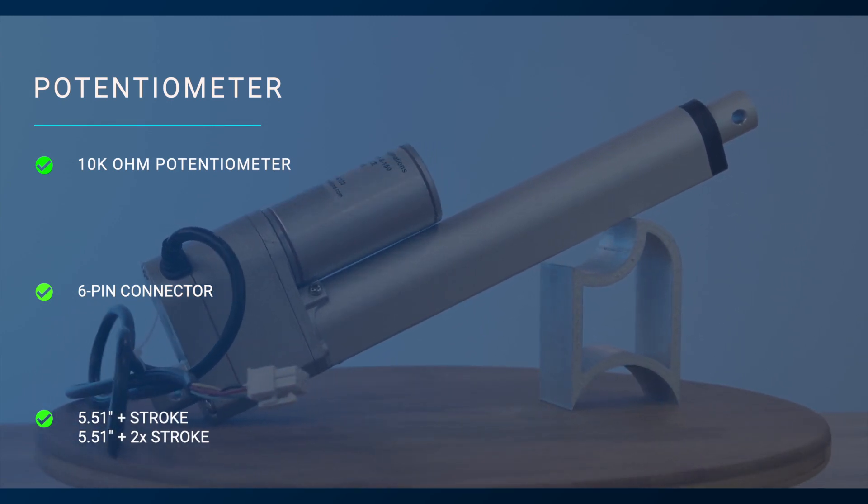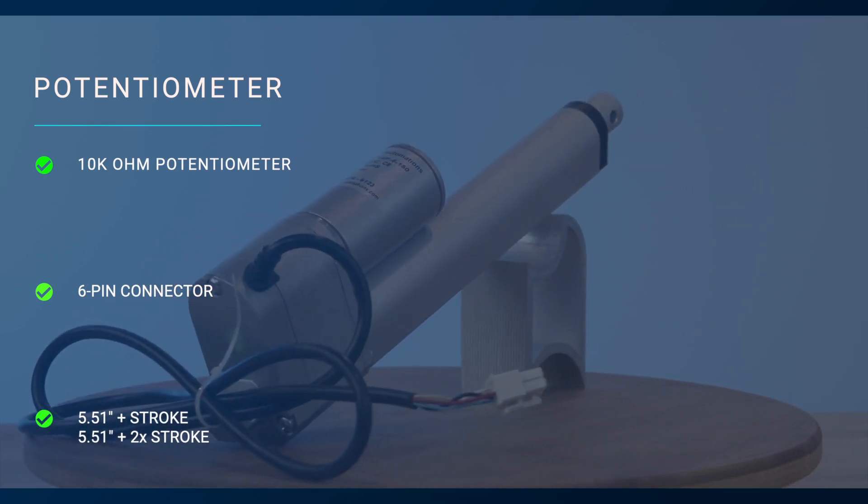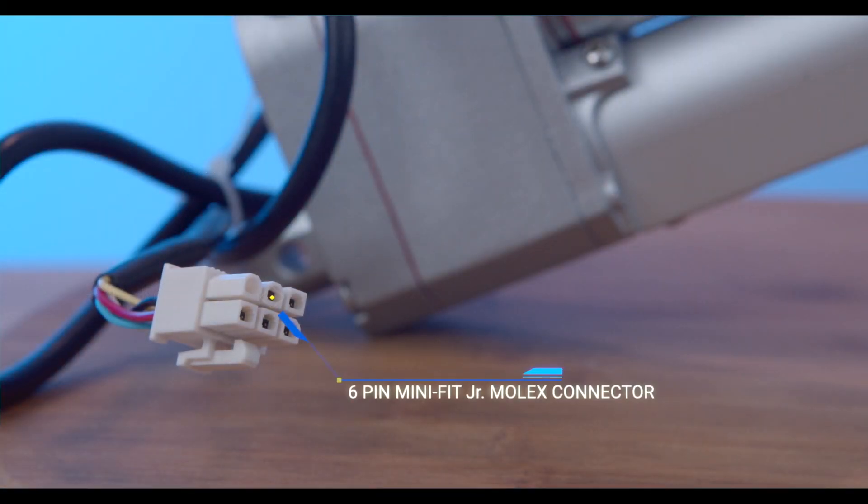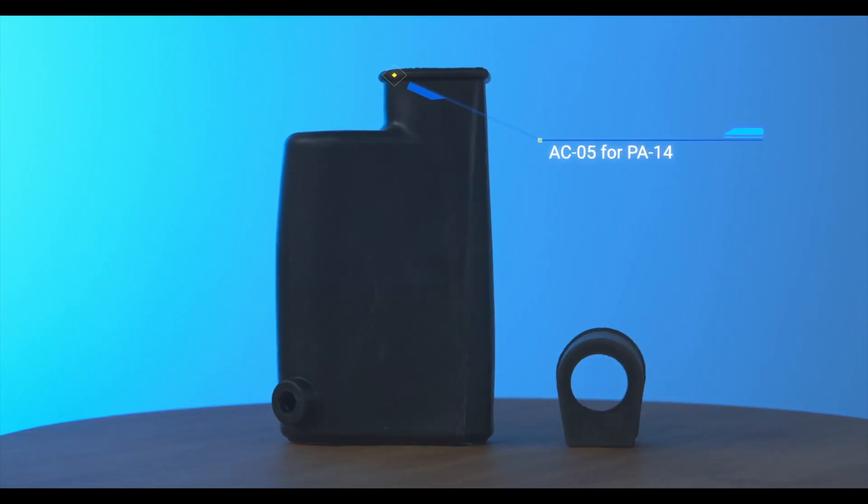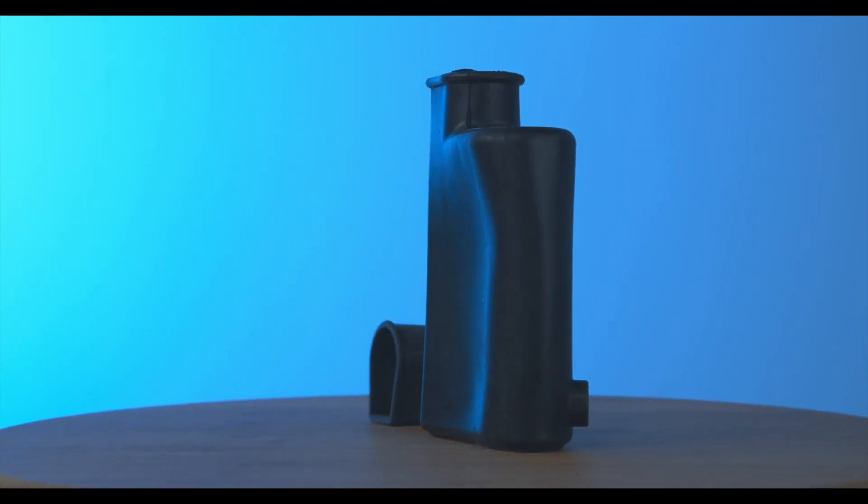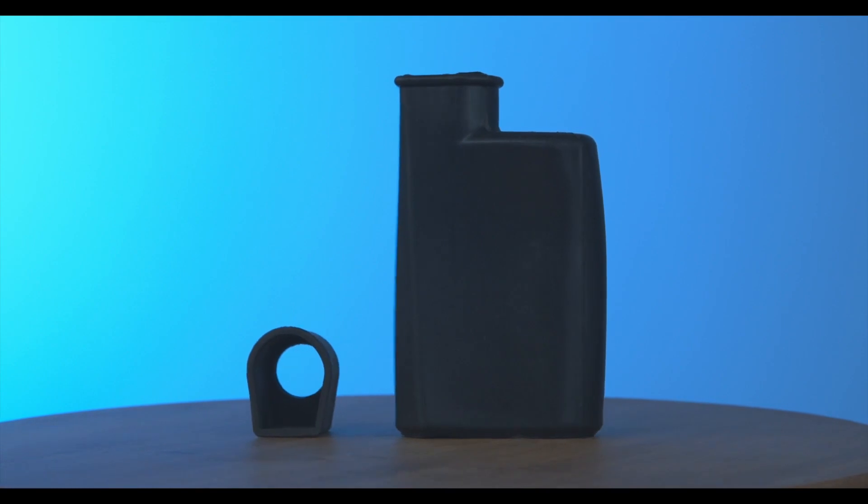The PA14P model is also available with a built-in 10k ohm potentiometer. This edition will have a slightly longer gear housing along with a six-pin Minifit Junior Molex connector. The AC05 provides added protection for the PA14P model against weather environments for outdoor applications.